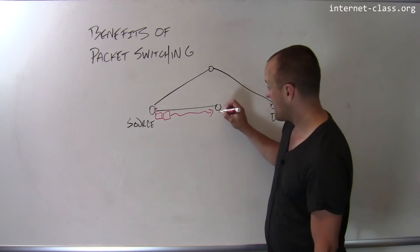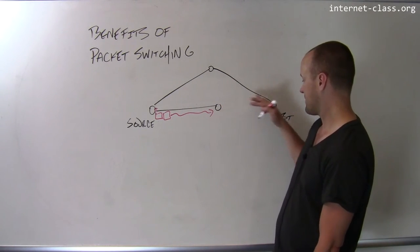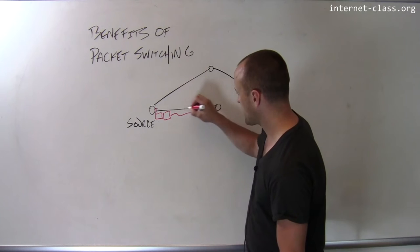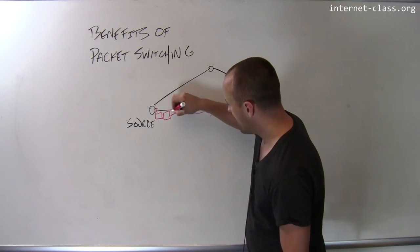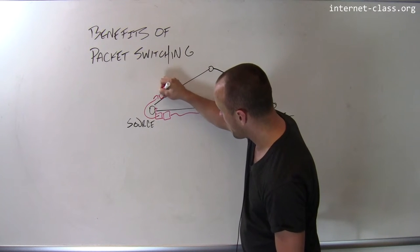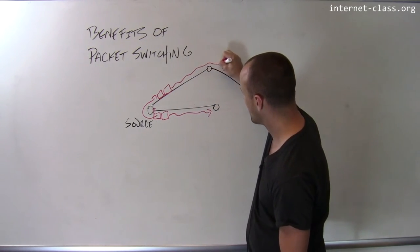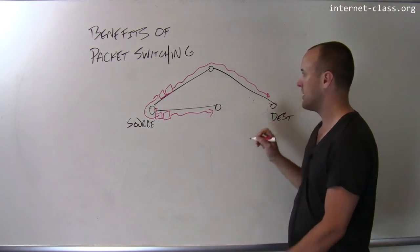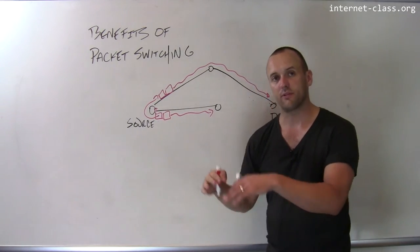Or the network may say, I can't get them to the destination anymore. You should actually send them down this path. And so eventually what's going to happen one way or another is these packets are going to find a new route to their destination using different network resources than I used initially.